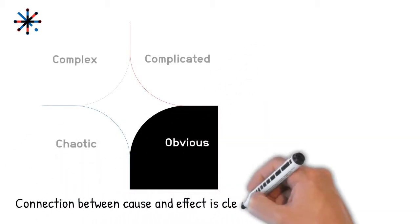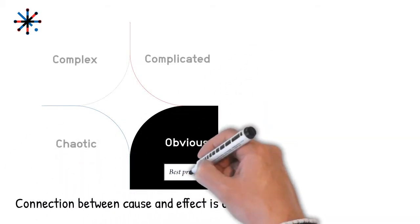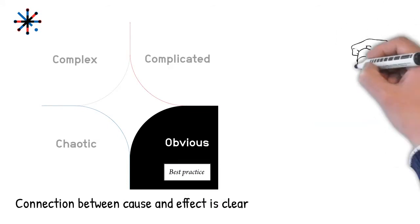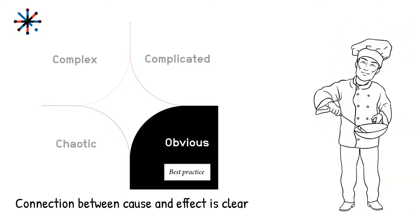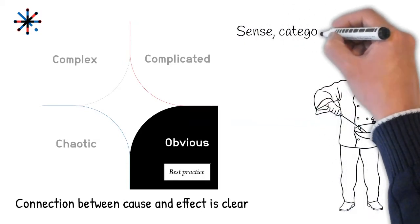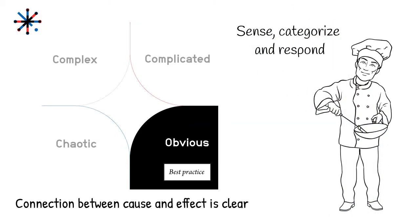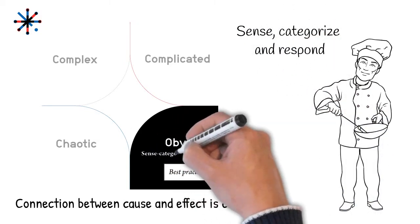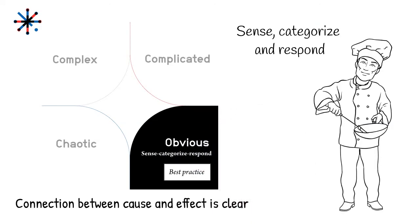The first domain consists of situations that are obvious. Here, the connection between cause and effect is clear and best practices exist. An example is cooking a dish. In this domain, the best way to react is to sense, categorize, and respond: look at the situation, select the best practice like a recipe or checklist, and take action.